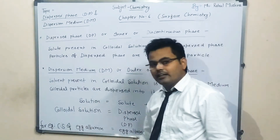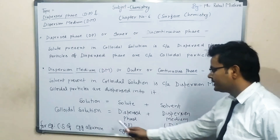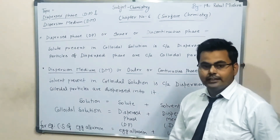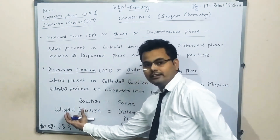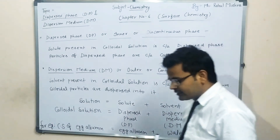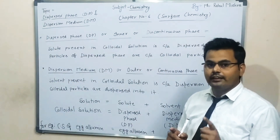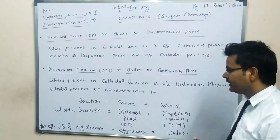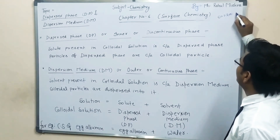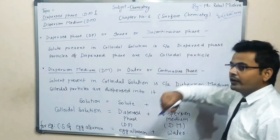We all know that any solution is made up of two components: solute and solvent. Similarly, colloidal solution — what is colloidal solution? We discussed this in the previous video lecture. Colloidal solutions are those solutions in which the size of solute particles lies in between 1 to 200 nanometer. This is the solute particle and its size lies in the range of 1 to 200 nanometer.